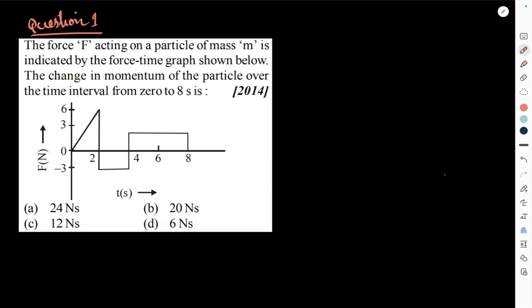Hello everyone, this is new chapter, Newton's law of motion and this is question number one. So if you look at this question, they said force F acting on a particle of mass M indicated by the force time graph. Calculate the change in momentum from 0 to 8 second.